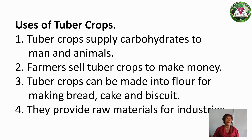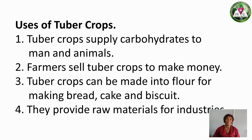Number 1 use of tuber crops: tuber crops supply carbohydrates to man and animals. The strength you get from food to do work comes from tuber crops. Without tuber crops, you can't have the strength to run, to jump, to play, or even to read. You have seen it is very important.